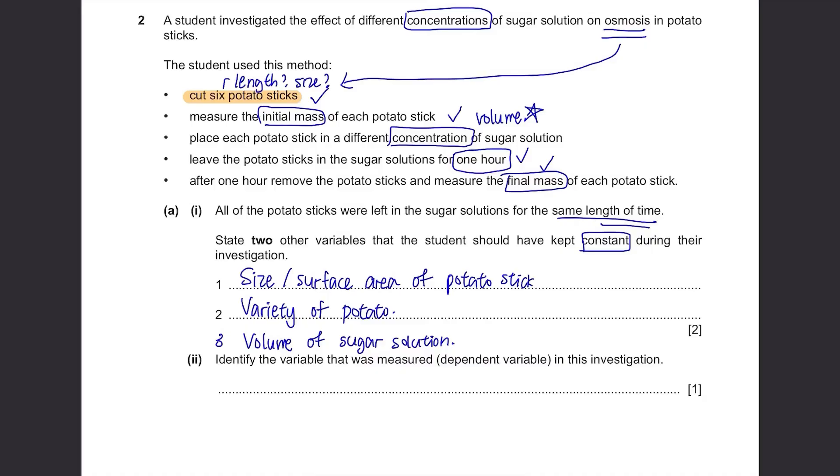Part B(i): Identify the variable that was measured, the dependent variable, in this investigation. What did they say they measured? They measured the initial mass and the final mass.